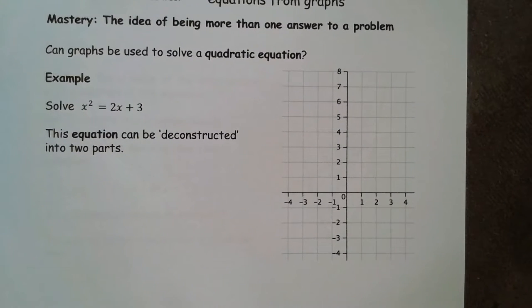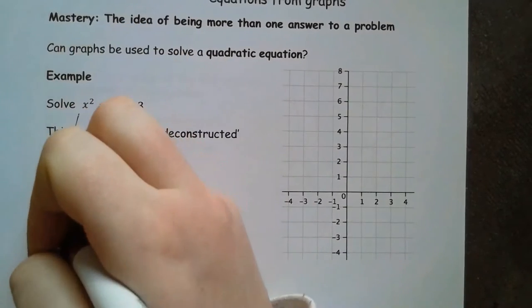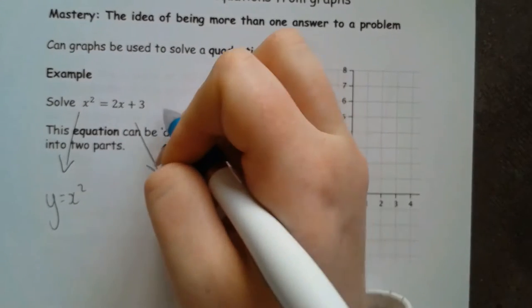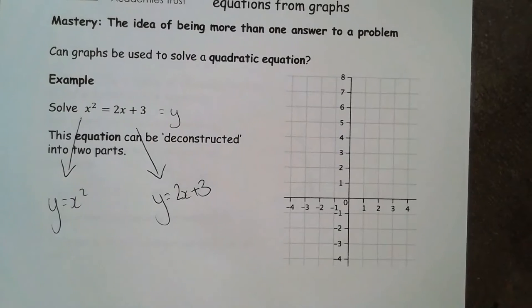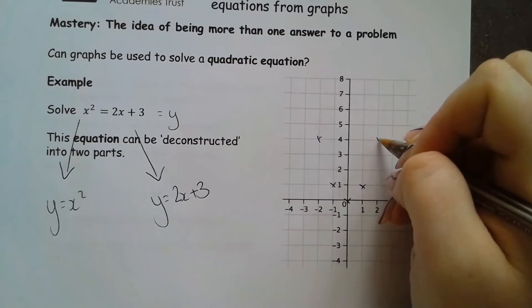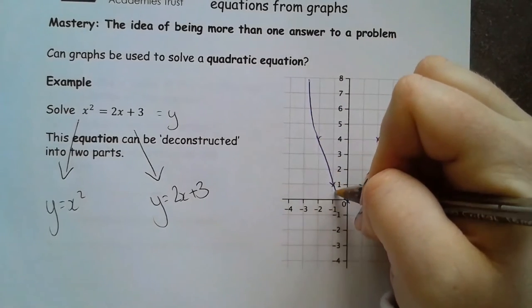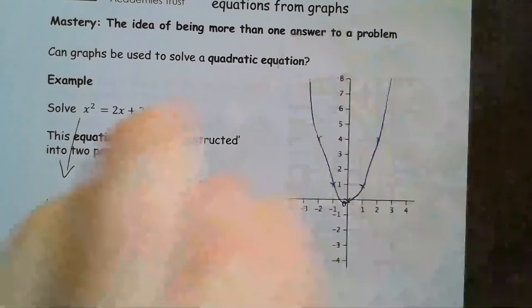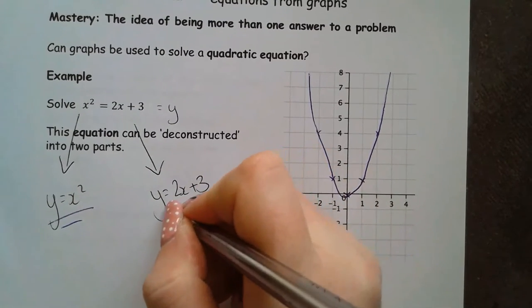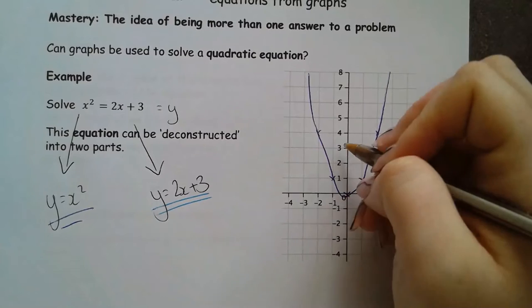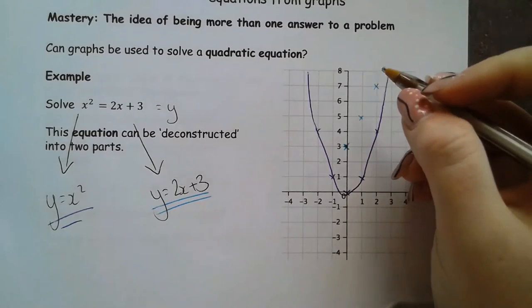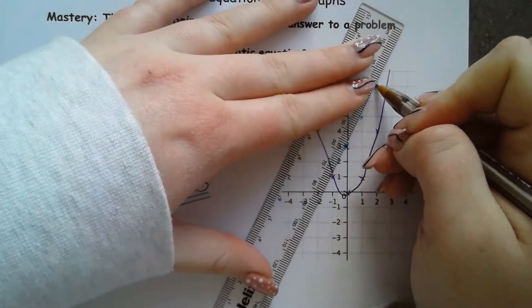We're going to just do one more that's very similar to that. So again I'm going to split this one up into y equals x squared and this time y equals 2x plus 3. It should be relatively easy for us to sketch this y equals x squared graph once again and we're looking for something like this. And then we've got y equals 2x plus 3. So 2x plus 3 goes through this 3, across 1 up 2, across 1 up 2. We've got something like this.